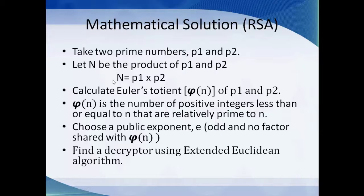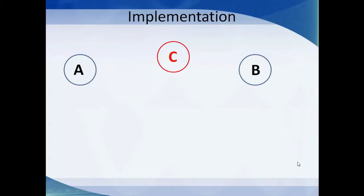Next we choose the public exponent e, which is chosen to be odd and to have no factor shared with φ(n). Then we design a decryptor using the extended Euclidean algorithm. We will see all these steps one by one, and there are Python codes to help us get the mod inverse and other important values. Let's now see the implementation.